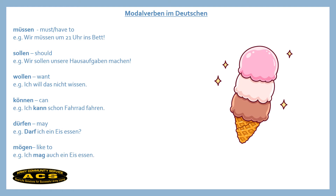Or Mögen, meaning 'like to': Ich mag auch ein Eis essen — I like to eat an ice cream as well.